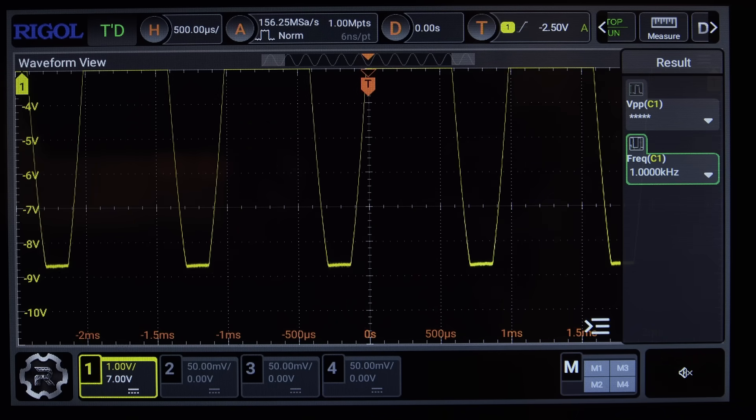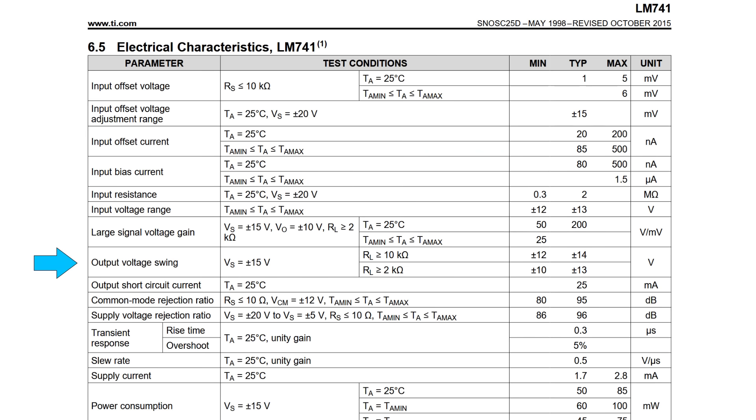The situation is even worse on the bottom half of the sine wave. Instead of having an amplifier that can output minus 10 volts, our 741-based amplifier can only swing as low as minus 8.8 volts. Well that sucks. If we look at the datasheet, we can see that the output of an LM741 typically only swings within a volt or two of the power supply rails.